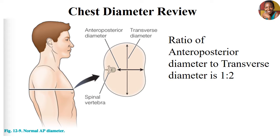On a normal person free from any respiratory illness, the ratio of the anterior-posterior diameter to the transverse diameter is one to two. This means the anterior-posterior diameter is half of the transverse diameter, or the transverse diameter is two times the anterior-posterior diameter. When a person gets affected by respiratory diseases, this chest ratio can change depending on the pathophysiology of the illness.